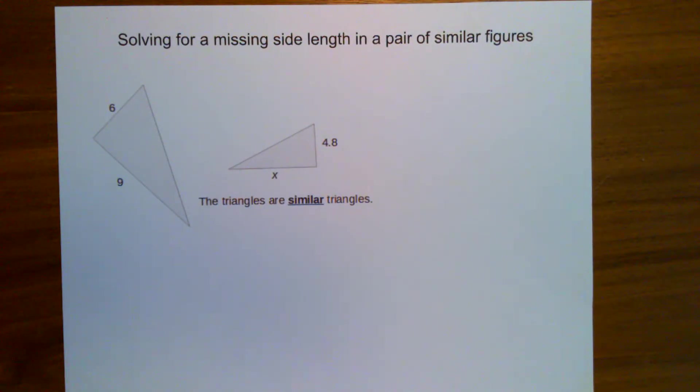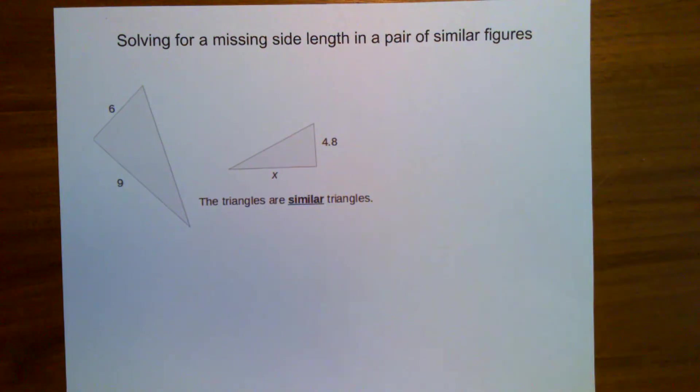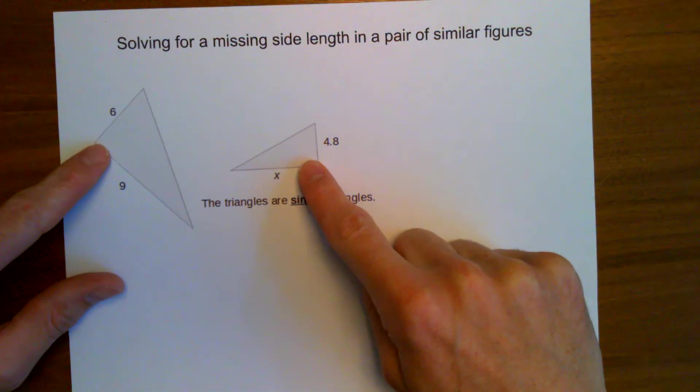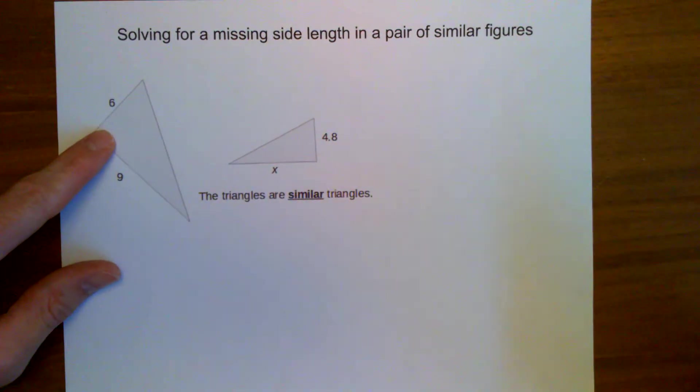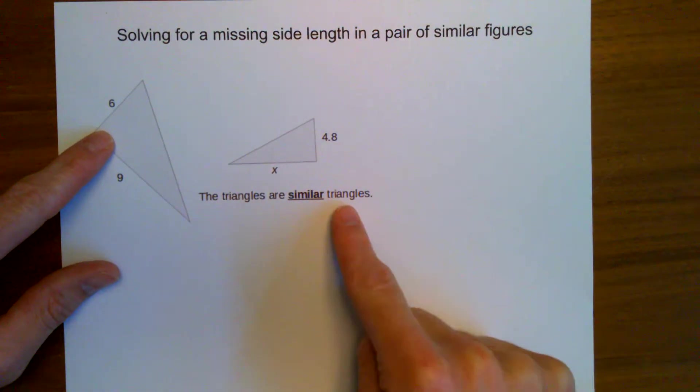Hello. In this video, I'd like to show you how to solve for the missing side length when you have a pair of similar figures. In this case, I have these two triangles. The problem states that these triangles are similar.